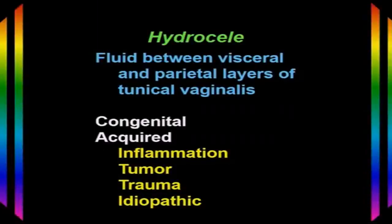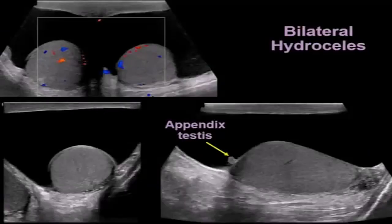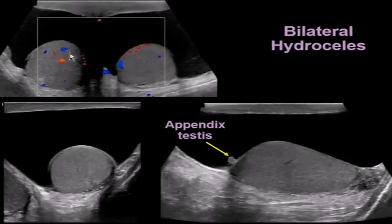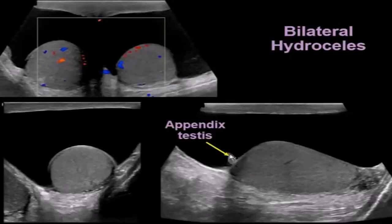Hydrocele occurs because fluid collects between the visceral and parietal layers of the tunica vaginalis. These can be congenital, but often they're acquired from inflammation, a tumor, trauma, or they could be idiopathic. Here's a patient with bilateral hydrocele — large scrotum with lots of fluid around both testicles with normal blood flow. In patients with hydrocele, you can actually see the appendix testis sticking off the testicle. This patient has a normal wide bare area with the testicle attached to the scrotal wall — not a bell clapper deformity.